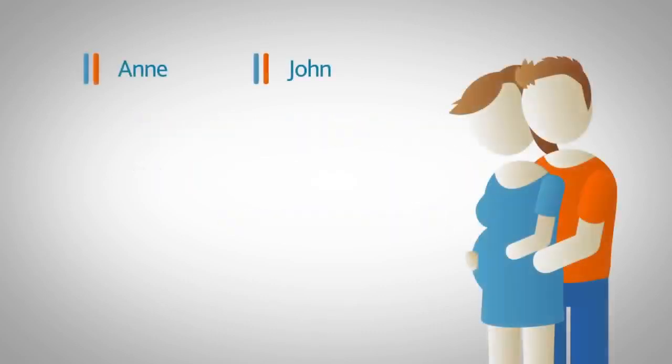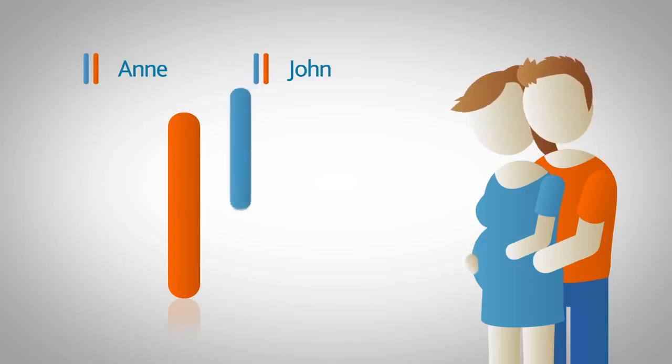If Anne passed on the non-working gene and John the normal working gene copy, then the child will be a healthy carrier, just like its parents.